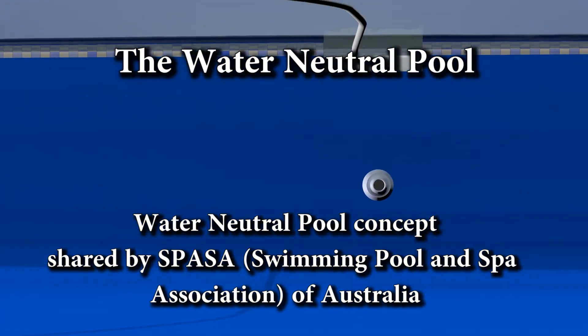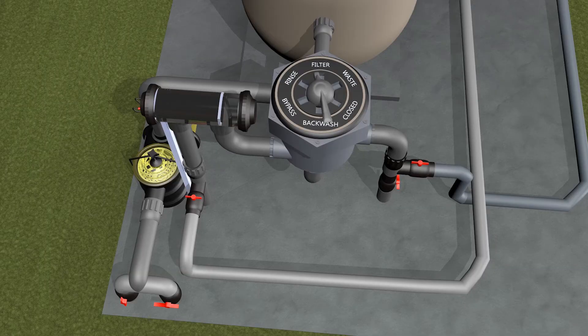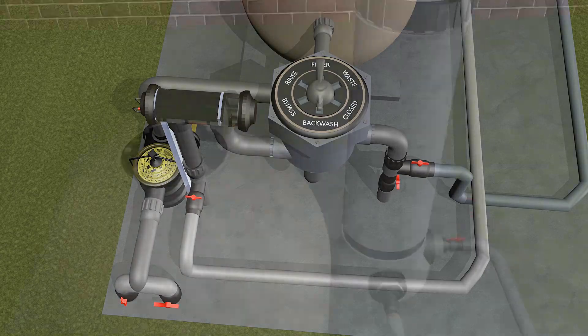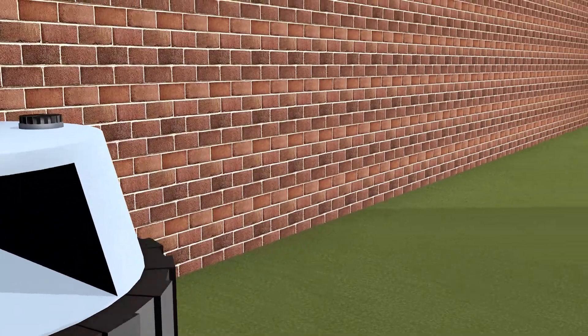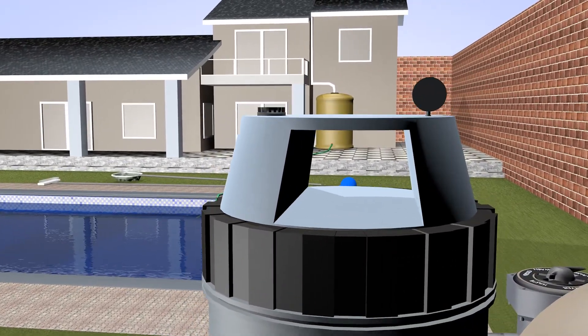A water neutral pool is designed to reduce the use and wastage of water within normal pool operations and cleaning. This is achieved by installing key new components to a pool during the renovation of existing pools.